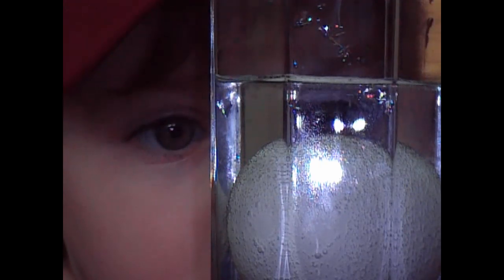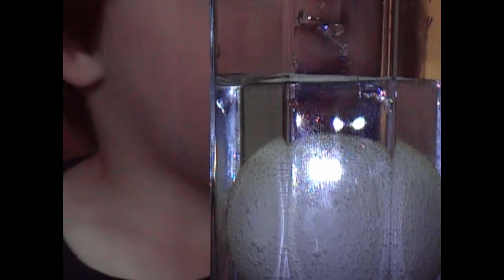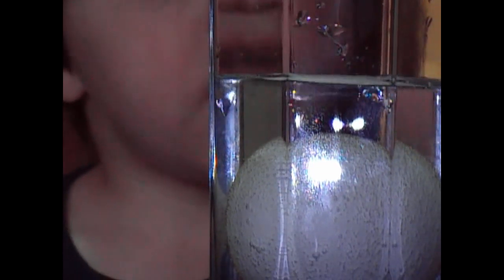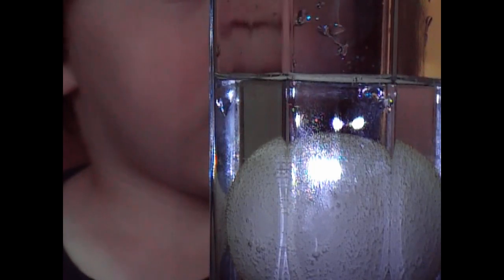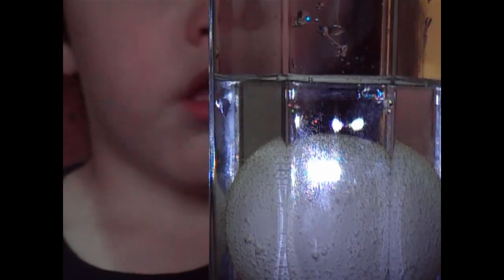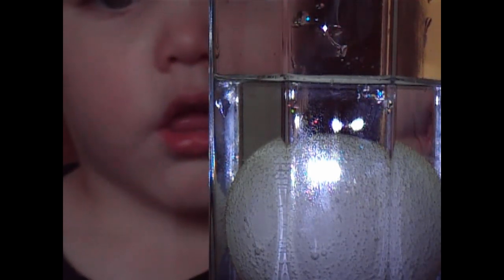Remember how hard it was to peel the egg? So we put vinegar in this cup, and the vinegar is peeling the egg for us. That's what all the bubbles are. Alright, see you later.